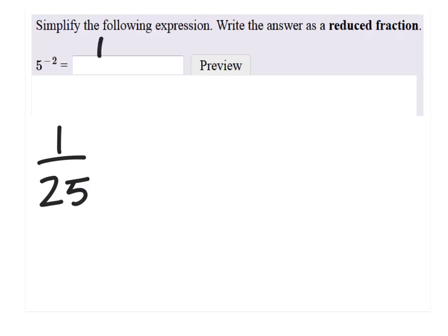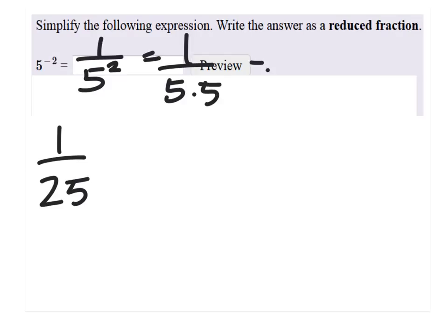We would say that the negative exponent reciprocates it into the fraction. And 5 to the power of 2 is 1 over 5 times 5, which is 1 over 25.